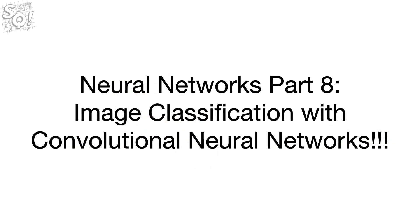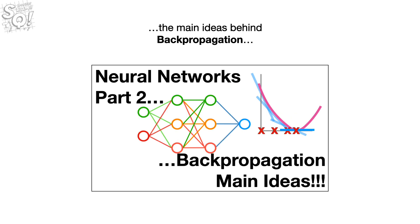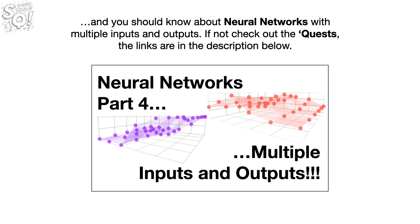Hello, I'm Josh Starmer and welcome to StatQuest. Today we're going to talk about Neural Networks Part 8, Image Classification with Convolutional Neural Networks. Note, this StatQuest assumes that you are already familiar with the main ideas behind Neural Networks, Backpropagation, the ReLU activation function, and Neural Networks with multiple inputs and outputs. If not, check out the quests. The links are in the description below.